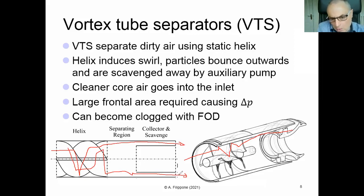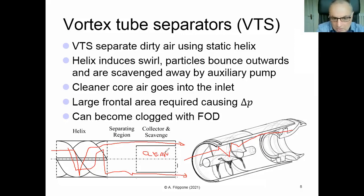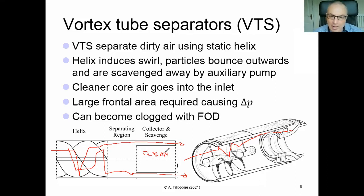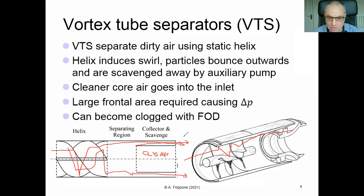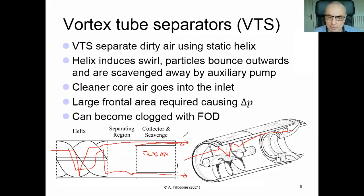The idea is that the particulate goes onto the scavenge side, leaving the central or core area as clean air. The system works by favoring the bouncing mechanism rather than centrifugal effects alone — both are present, but since the helix is fixed and not moving, the main way particles reach the outer wall is by bouncing. Because of the high speed they are then sucked out into the scavenge flow. There is a scavenge channel, a collector, and often a scavenge pump to facilitate removal. The helix induces a swirl, but multiple bouncing is the main separation mechanism.